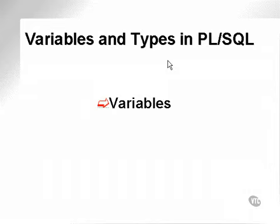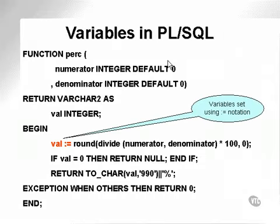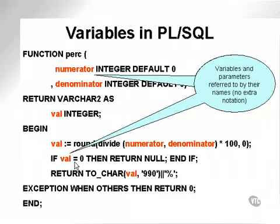Variables and types in PL/SQL. What can we look at as far as variables are concerned? First of all, when setting a variable inside a PL/SQL block, the variable is set using colon equals notation as shown here. Variables and parameters are all referred to by their own names. Some database languages require that you put colons before the variable name. That is not the case in Oracle, as you can see.